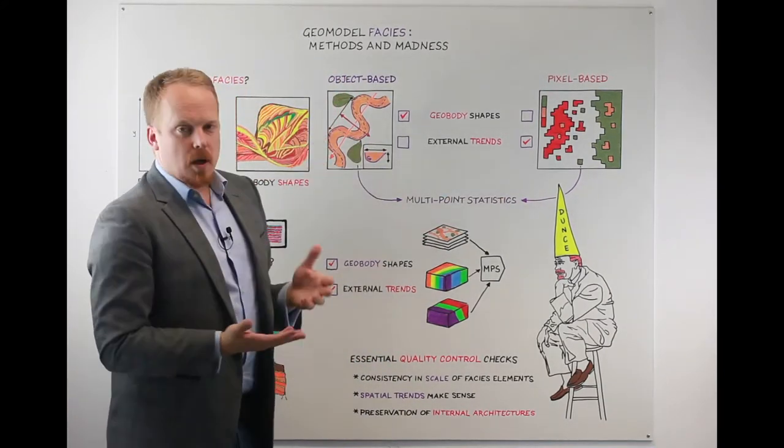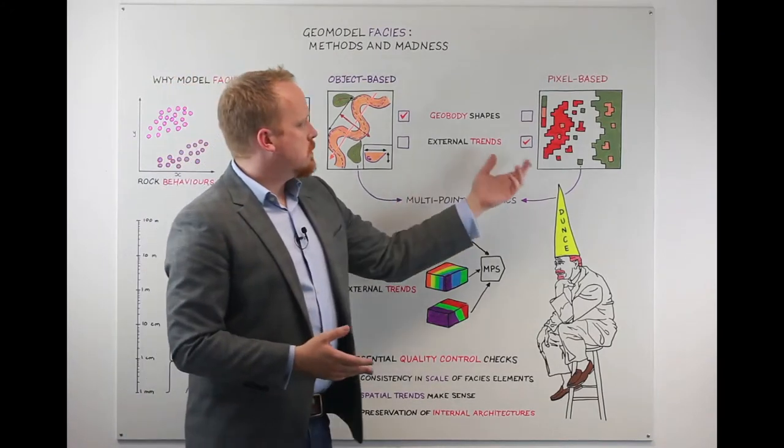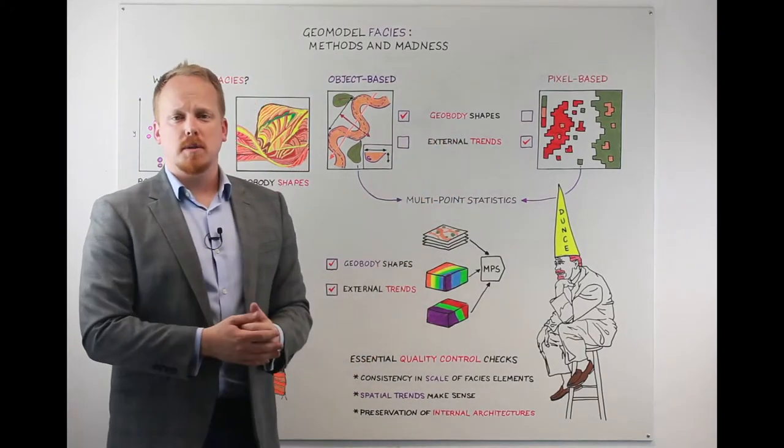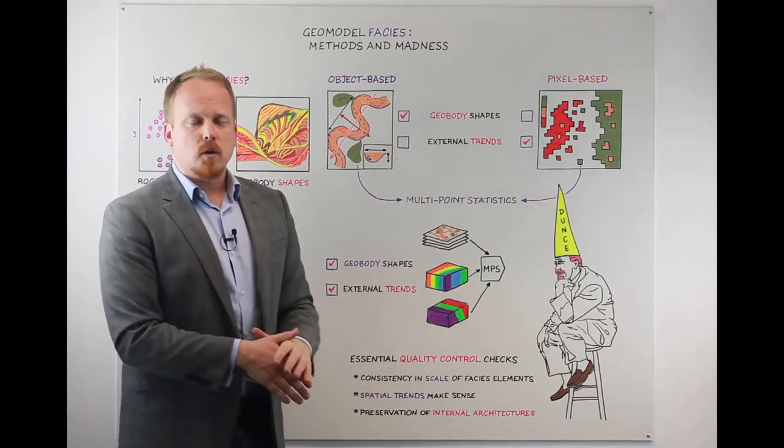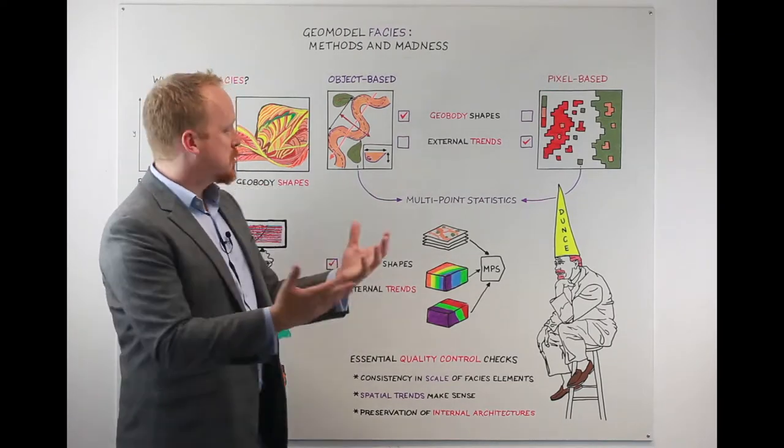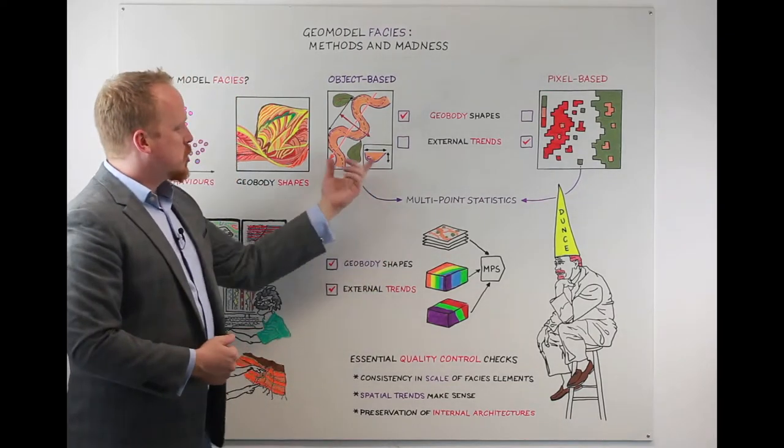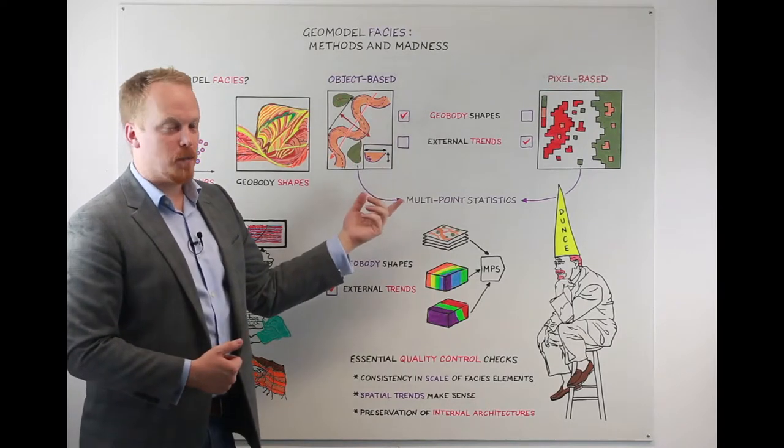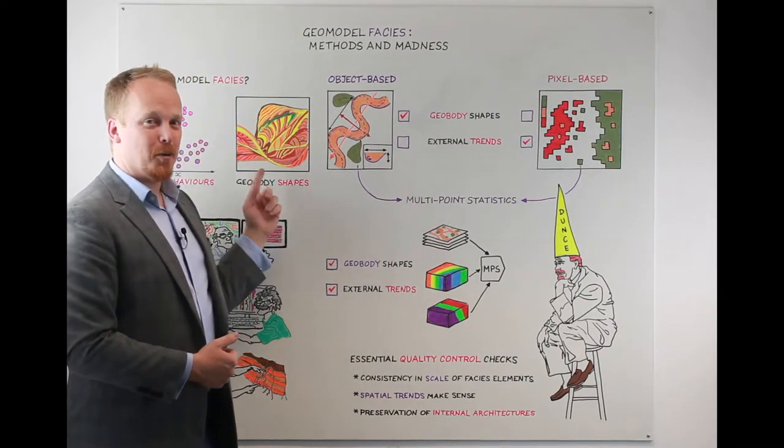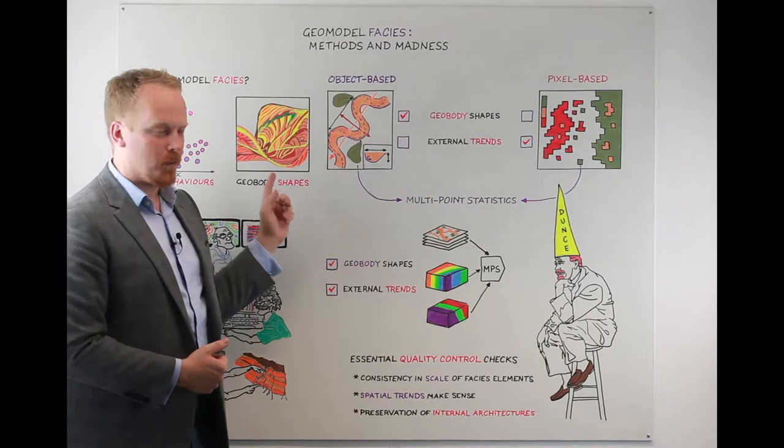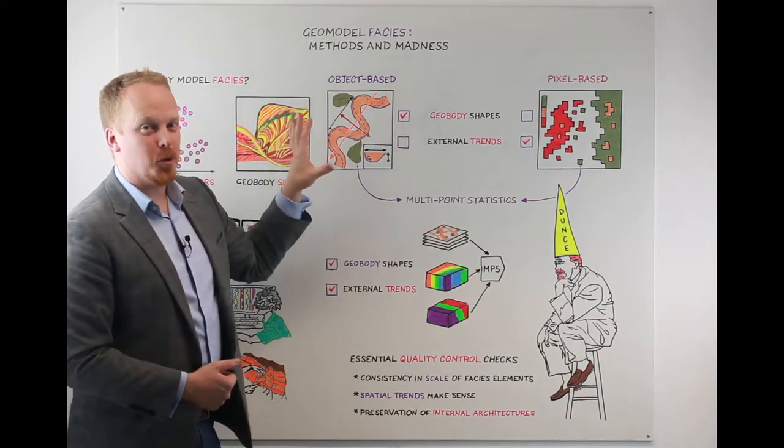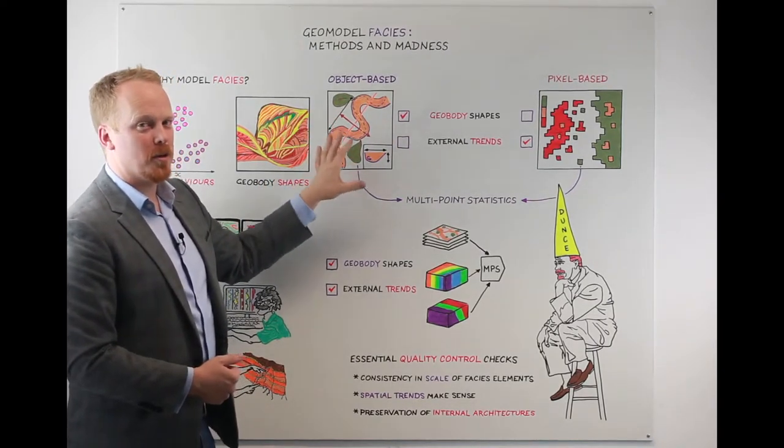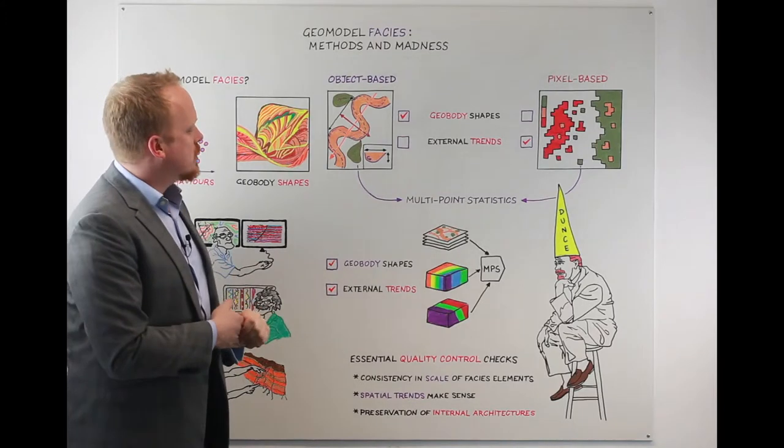But the object-based models are perhaps more powerful than the pixel-based methods at preserving some of those geobody shapes. And that can be particularly useful in channelised bodies. But you can also see that some of the choices you get in creating an object-based model don't necessarily very well reflect what we see in the outcrop. So it's important to remember to model what's deposited and preserved not what's in an active modern system.